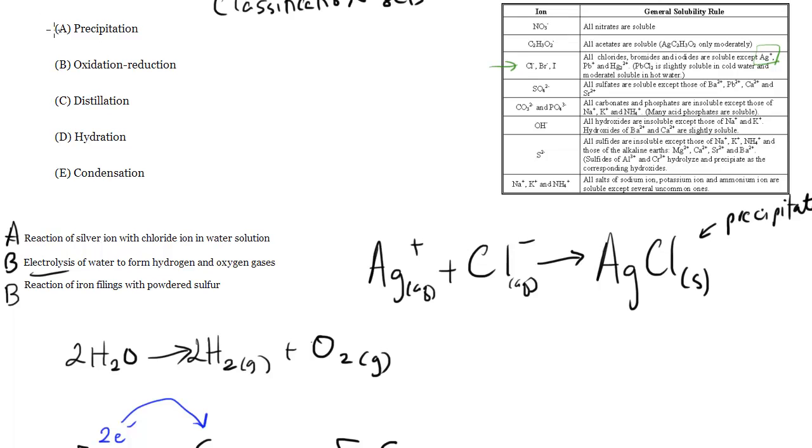So we used A and B, let's just talk about the other three so we're clear on what they are. Distillation is a process used to separate generally liquids by boiling, vaporization.